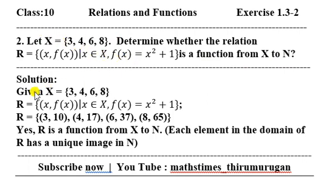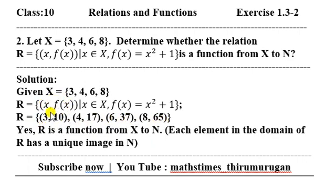X is given. The relation R is given as a set. Let's work through it step by step. One ordered pair is (x, f(x)), that is clear — one ordered pair.